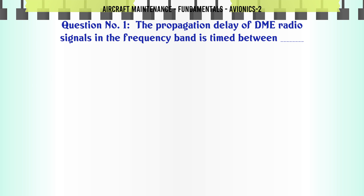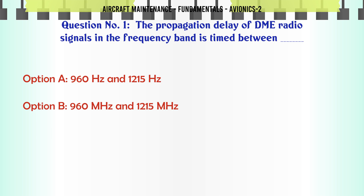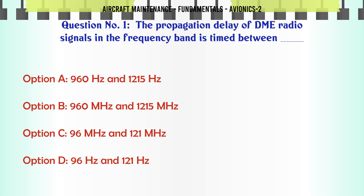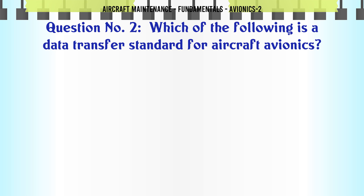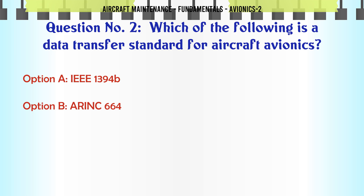The propagation delay of DME radio signals is in the frequency band: A. 960 Hz and 1215 Hz, B. 960 MHz and 1215 MHz, C. 96 MHz and 121 MHz, D. 96 Hz and 121 Hz. The correct answer is 960 MHz and 1215 MHz.